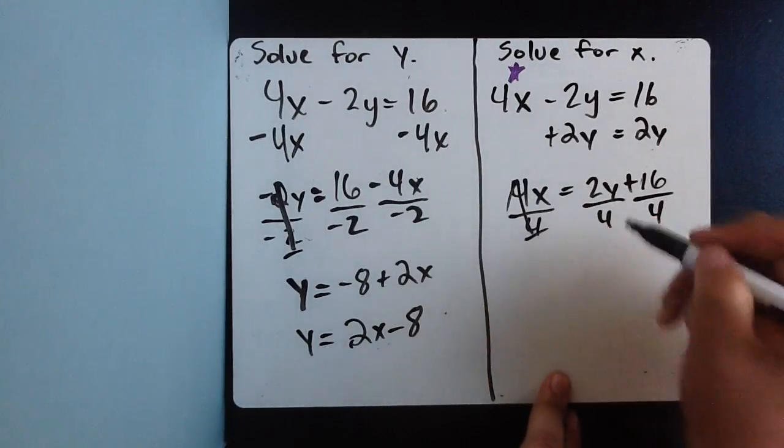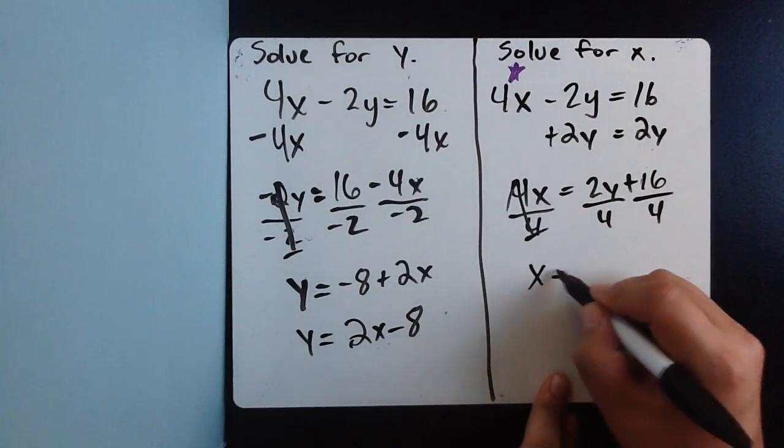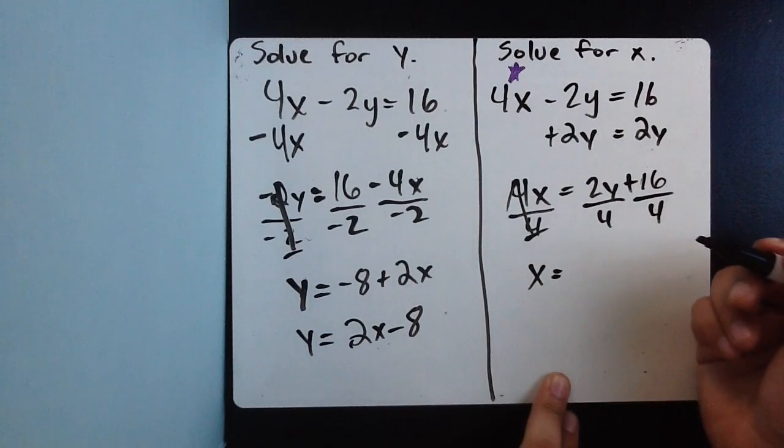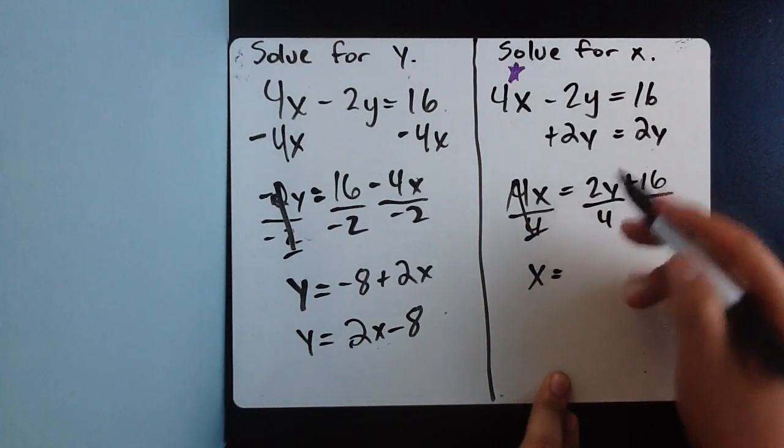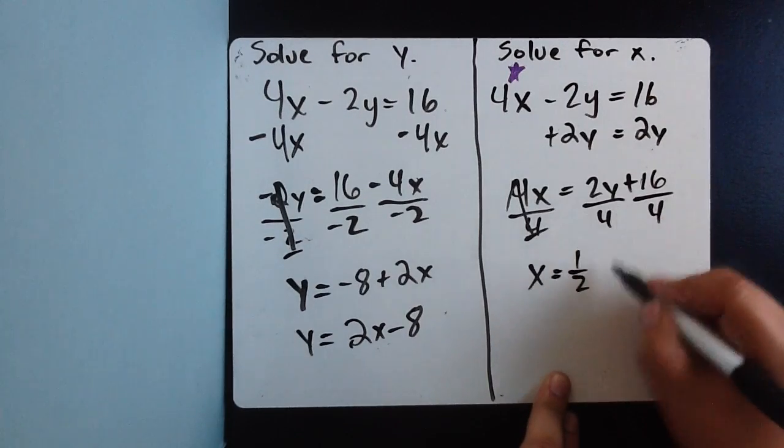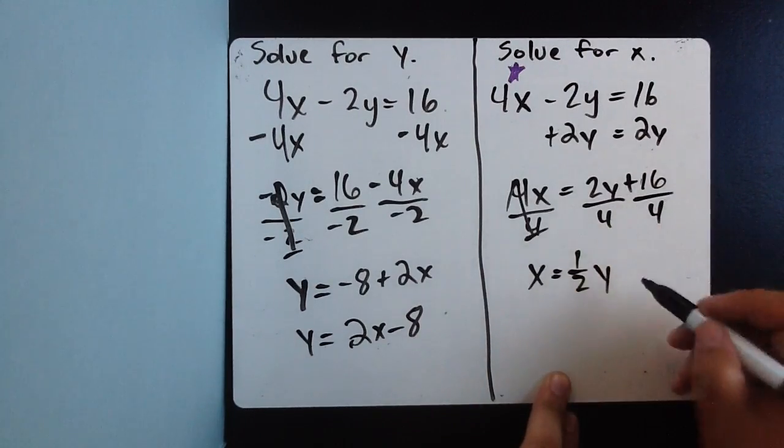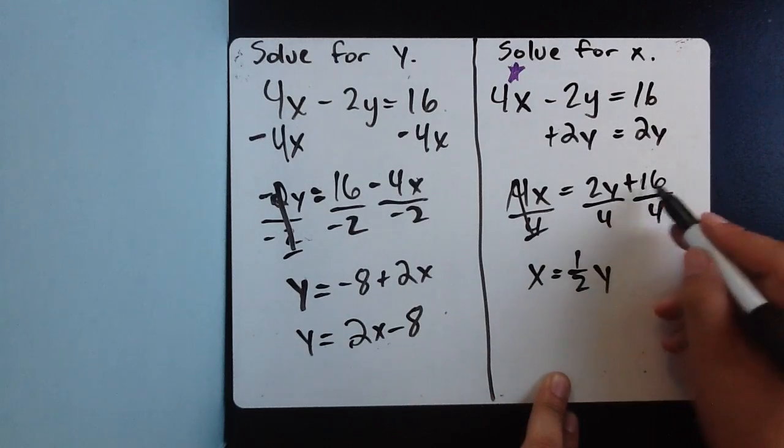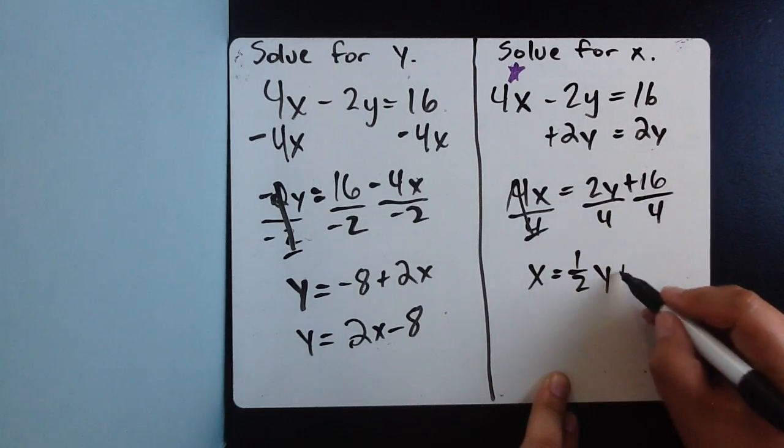This becomes a giant 1. I'm left with x equals, now, 2 divided by 4, well, that doesn't equal 2. 4 divided into 2, which is 2 fourths, which would be half. So, I'm going to put 1 half times y, positive 16. I almost forgot the sign. Positive 16 divided by positive 4, that's a plus 4.